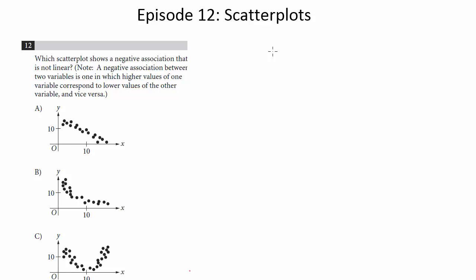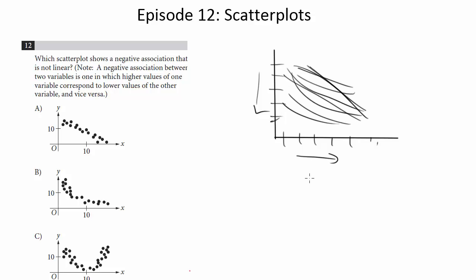So what we should expect then, if we're just kind of sketching out our own graph, is as our x-coordinate increases, as we go to the right, this y-coordinate should decrease. That's what a negative association means. So we should get something sloped or curved downwards like that.